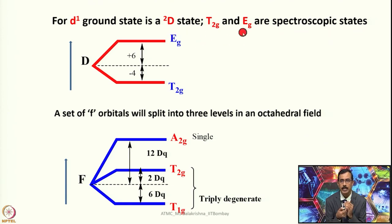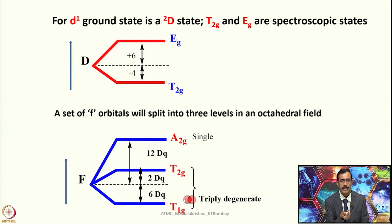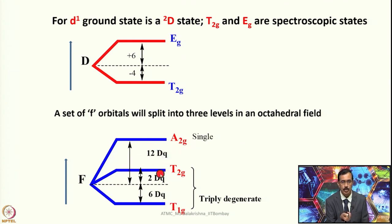The D orbital will be split into T2G and EG in an octahedral field, and these things also originate from Mulliken symbols. If you see the table I have provided, you will come to know how the D state splits into triply degenerate and doubly degenerate. For F orbitals, they split into three levels in an octahedral field — T1G, T2G, and A2G — with corresponding values in DQ also given.